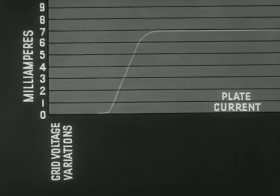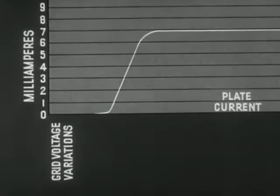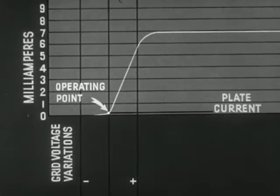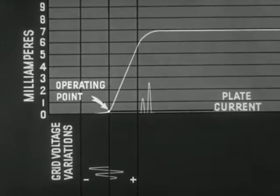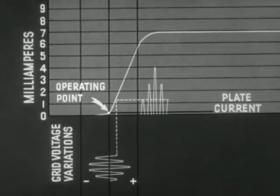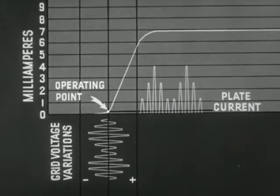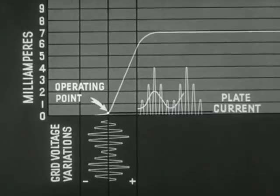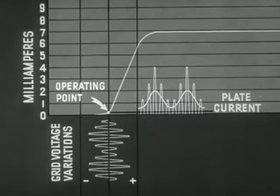The vacuum tube may also be operated as a detector. When used for this purpose, the grid bias is adjusted so that the operating point of the tube is just below the straight portion, or knee, of the characteristic curve. As a result, the positive half cycle of the radio frequency current in the grid circuit is amplified much more than the negative half of the cycle. The average plate current resulting from the unequal amplification of the positive and negative half cycles will be a direct current pulsating at audio frequency. Such a current will operate the earphones.